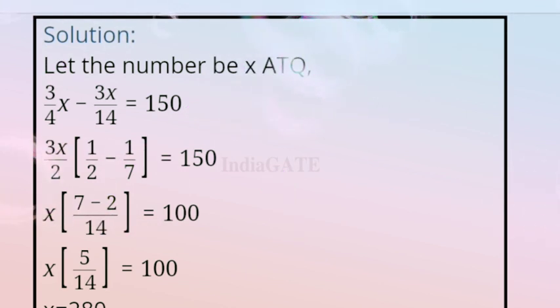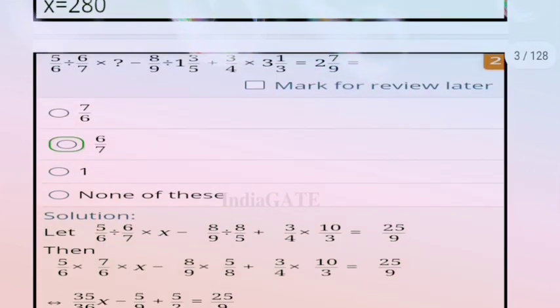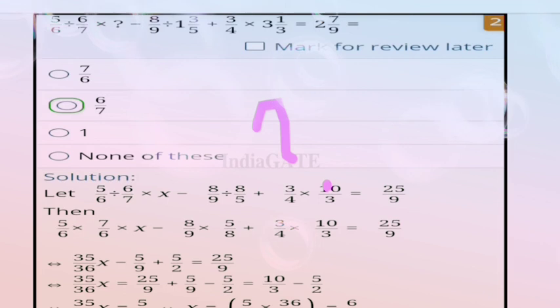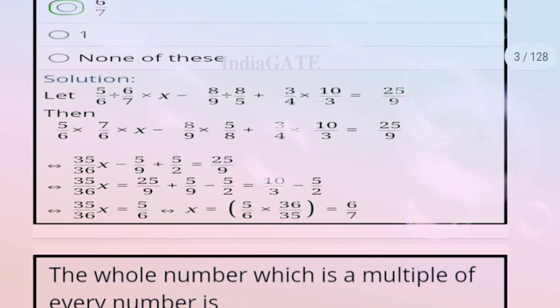The next question is from simplification. We need to find the question mark — assume it as X, Y, Z, anything you are comfortable with. The correct answer for this expression is option B, 6/7. The solution is already given here; you can take a screenshot of this solution.